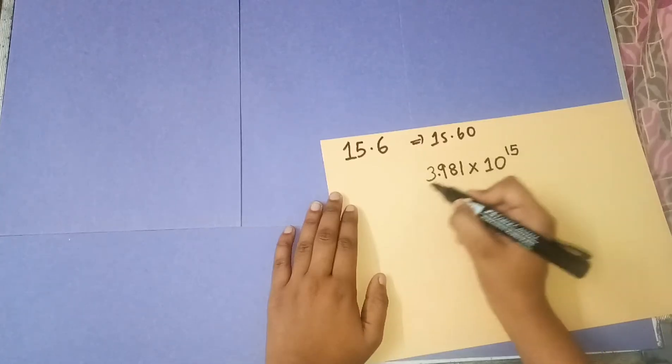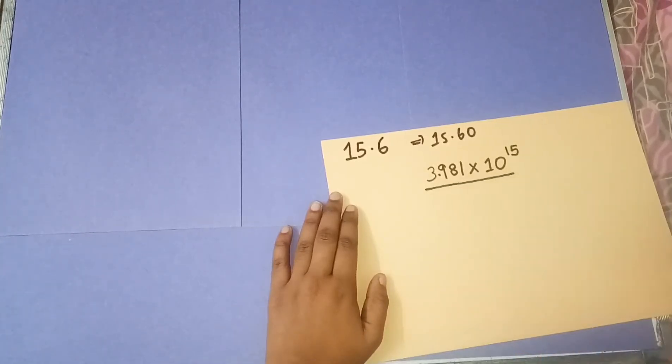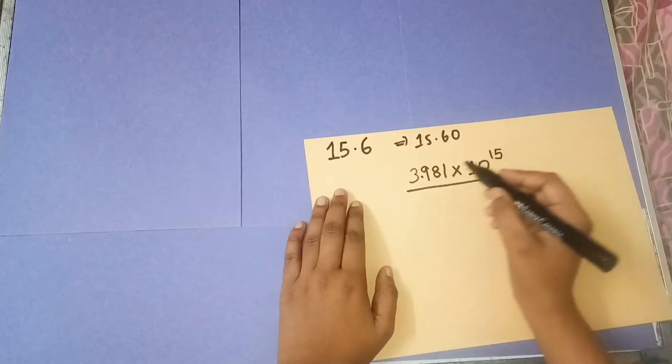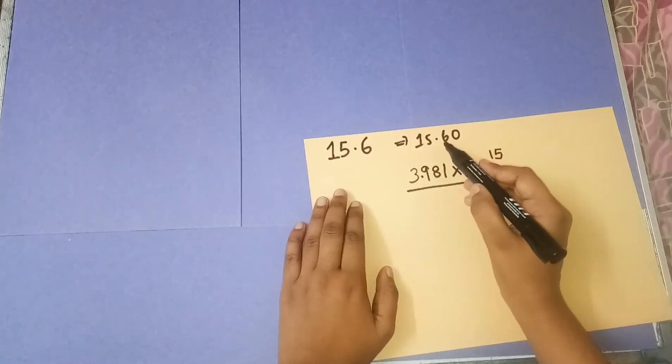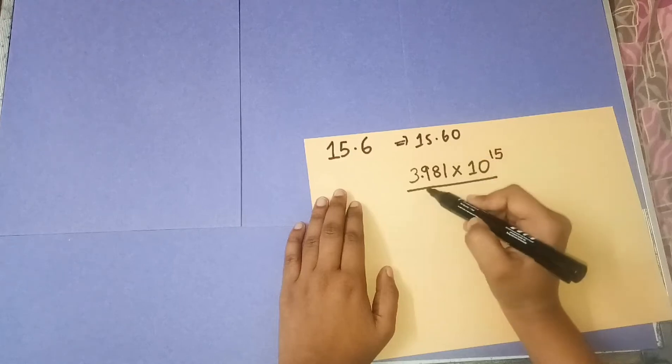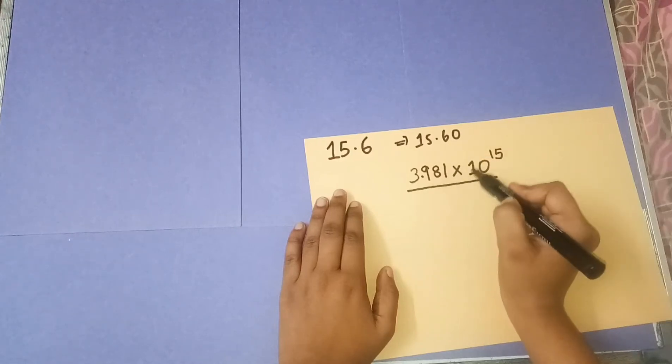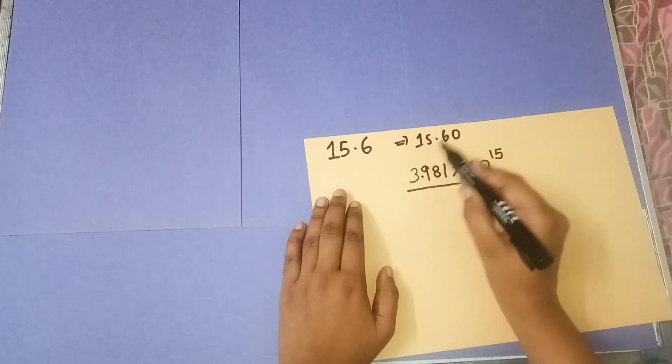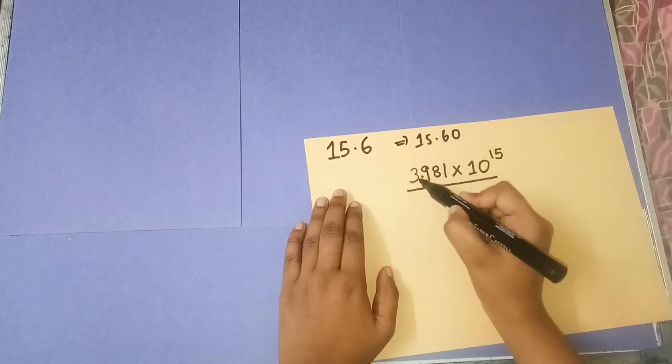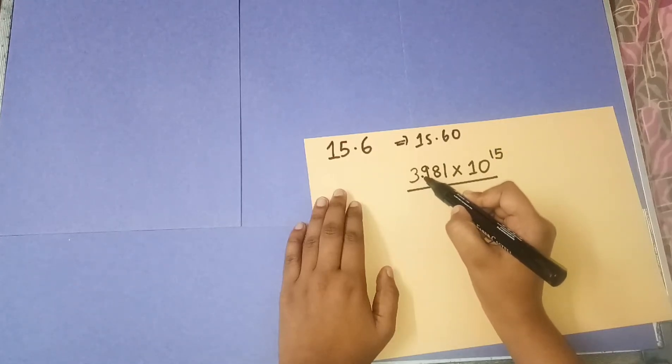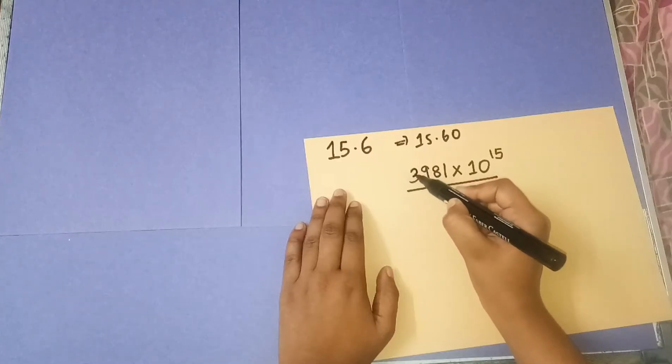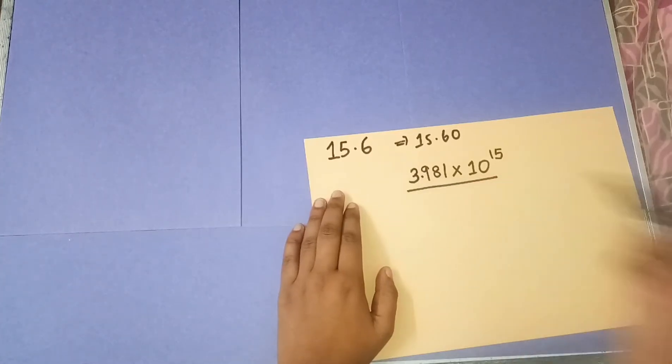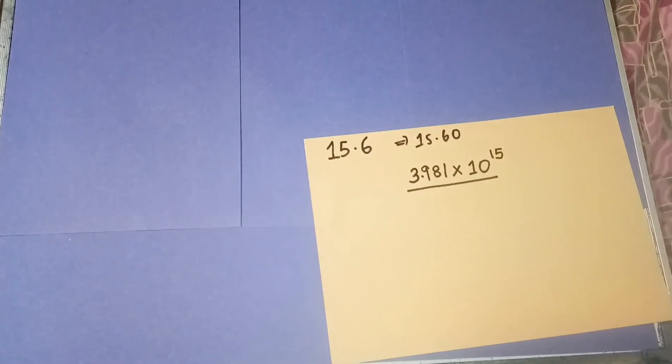The final step is to add a decimal point after the first digit. Repeating the steps: find the antilog of 0.60 from the log table, write it times 10 to the power of the whole number part, then add a decimal point after the first digit.